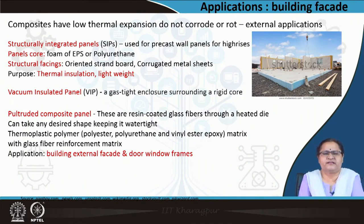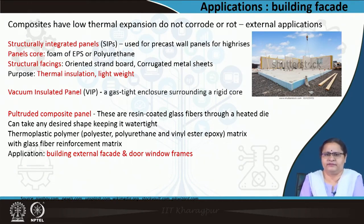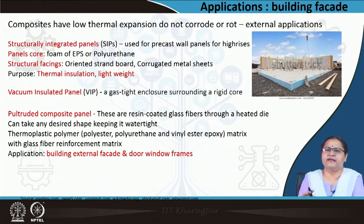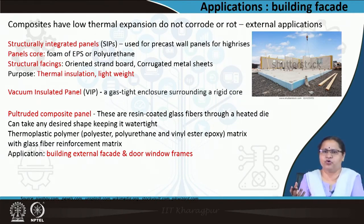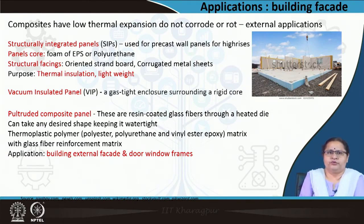We have pultruded composite panels, where resin-coated glass fibres are passed through a heat die. Resin is the matrix and glass fibre is the reinforcement, and you can give any desired shape. You can get pipes, walls, facades, and doors and window frames with glass fibre reinforcement within the resin. The major shift from the other two is that it can take any shape because the resin here is a thermoplast.